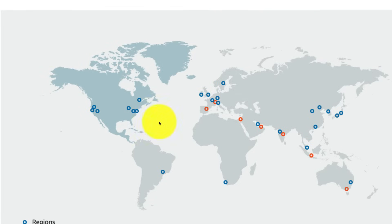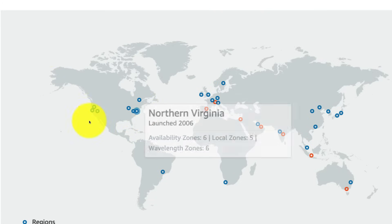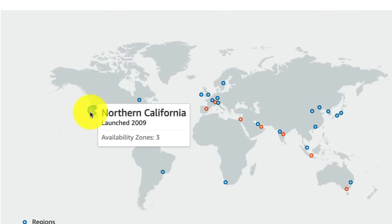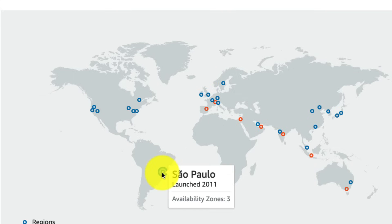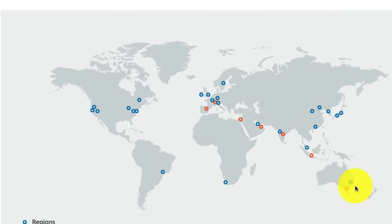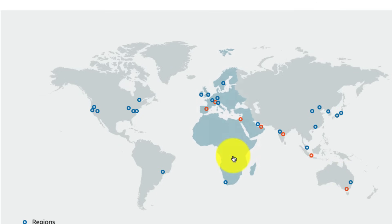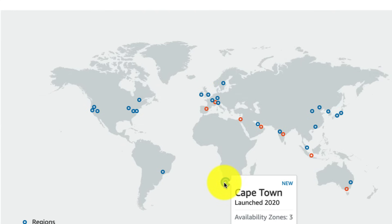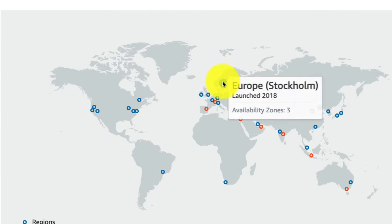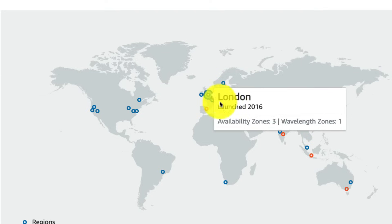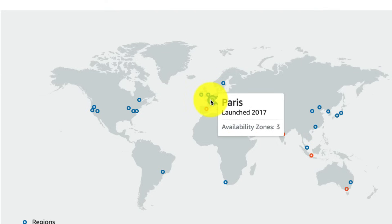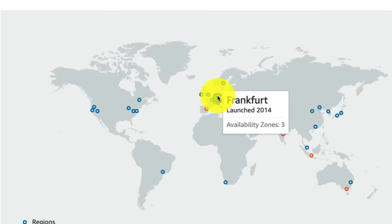Let's start with North America. AWS has a region in Northern Virginia and in Northern California. AWS also has a region in São Paulo, Brazil. In Australia, AWS has a region in Sydney. In South Africa, AWS has a region in Cape Town. In Europe, AWS has regions in Ireland, London, Paris, Frankfurt, Germany, Italy, and Milan. Spain is coming soon.